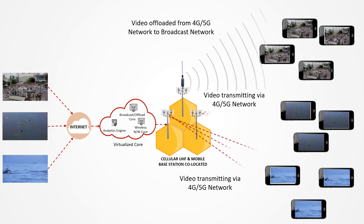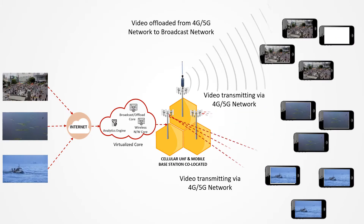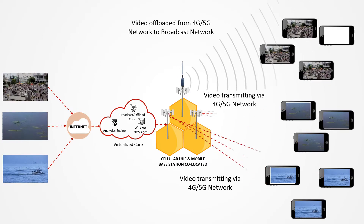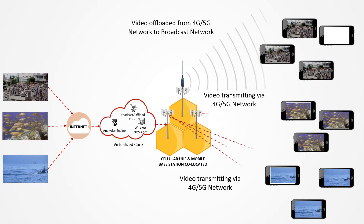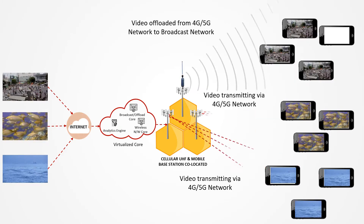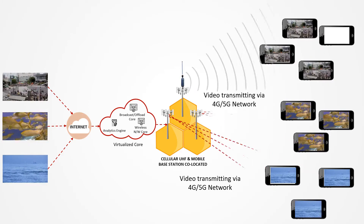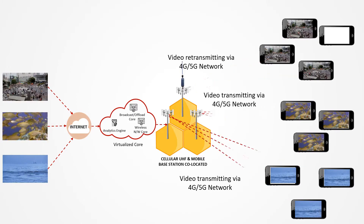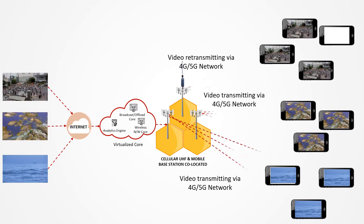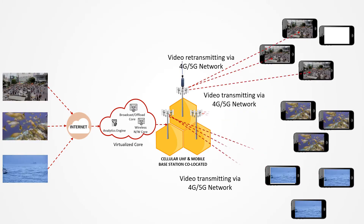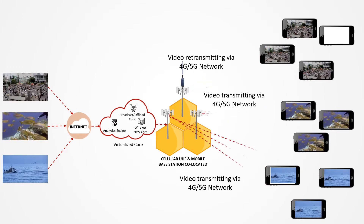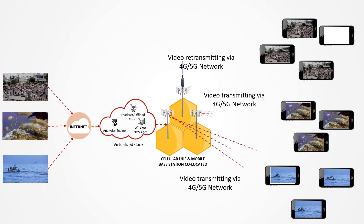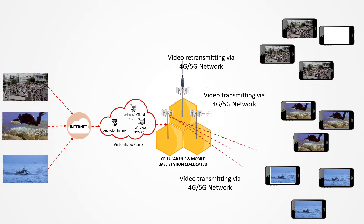If the additional user stops watching the content, the system will automatically detect this and calculate that the load has fallen below the threshold level. The content may then start transmitting over the mobile network again in a unicast profile, based on analytics of various factors. Thus, 5G Broadcast helps regulate the load on the mobile network by offloading heavy video content to the broadcast network.